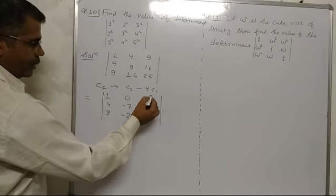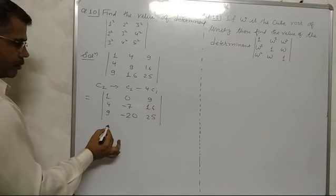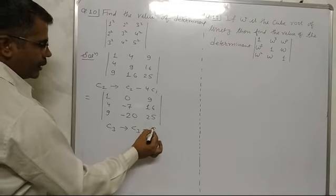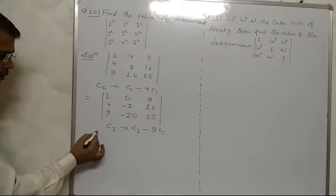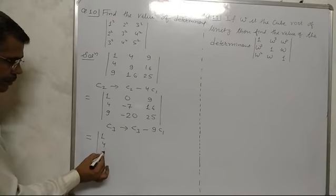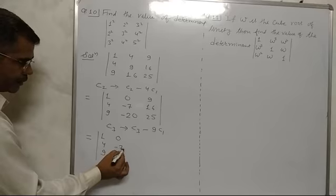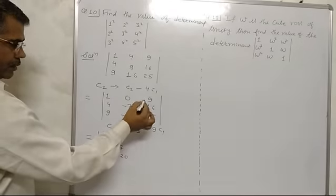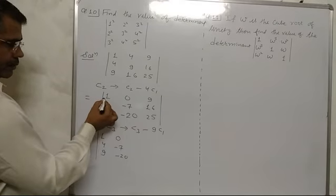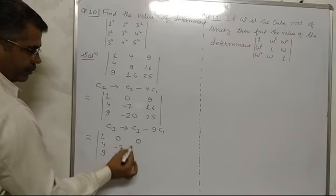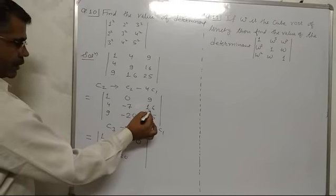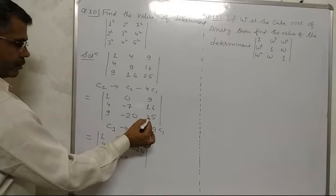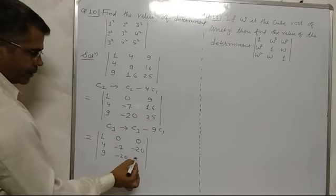We need another zero, so we apply C3 gives C3 minus 9 times of C1. First column 1, 4, 9 remains. Second column 0, minus 7, minus 20 remains. Third column: 9 minus 9 gives 0; 16 minus 36 gives minus 20; 25 minus 81 gives minus 56.